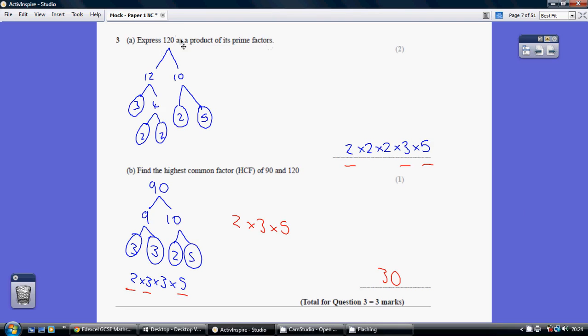So any two whole numbers that multiply make 120, say 12 and 10. Any two whole numbers that make 12, say 3 and 4, make 10, 2 and 5.